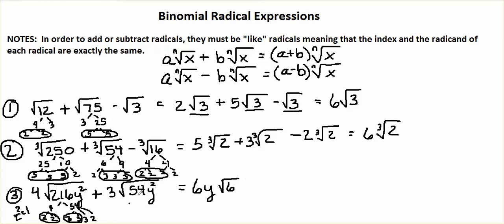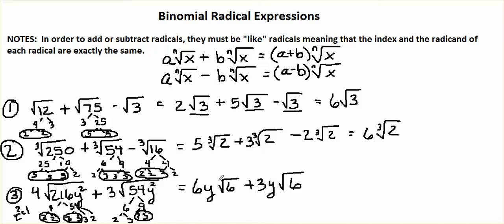Now let's move on to 54. When we factor, we get 6 times 9. 9 factors into 3 times 3, and 6 is 2 times 3. We're looking for groups of 2 — this is our only group of 2, so we pull out a 3. We also have y squared, so we pull out one y. We have a 2 and a 3 left, so 2 times 3 is 6. Now our radicals are both square roots with 6 underneath. We can add the terms on the outside: 6y plus 3y is 9y radical 6.